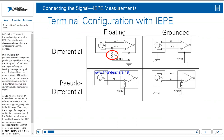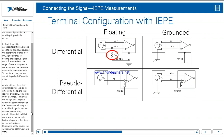Let's talk briefly about terminal configuration with IEPE. In short, leave it in pseudodifferential and you're good to go. Most DAQ signals, if they're floating, the negative signal could float outside of the range of what a DAQ device can accept, causing unexpected measurements. To counteract that, we use differential mode with an external resistor, typically in the 1k ohm range, bringing the voltage of AI negative within the common mode of the DAQ device. For IEPE devices, we use pseudodifferential, which uses an internal resistor — either 50 ohm or 1 kilo ohm depending on the device.